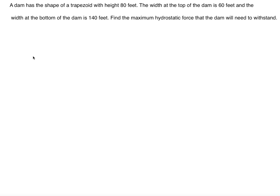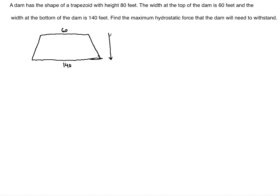So first we're going to draw a picture to assist us in setting up the problem correctly. The shape is a trapezoid — the width at the top of the dam is 60 feet and the bottom is longer, so we'll have a trapezoid like this. This will be the bottom of the dam, which is 140 feet, the top is 60 feet, and the height is 80 feet.